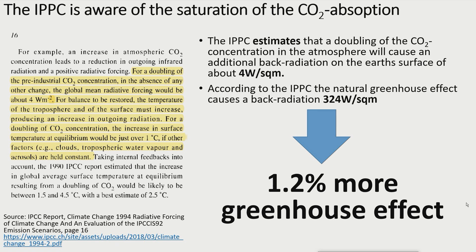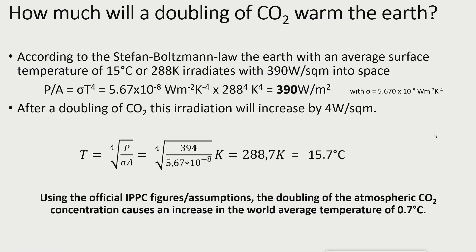Now let's calculate, with the official IPCC figures, what warming effect a doubling of the atmospheric CO2 concentration should have. According to the Stefan-Boltzmann law, the Earth with an average surface temperature of 15 degrees centigrade or 288 Kelvin irradiates 390 watts per square meter. After a doubling of CO2, this irradiation increases by 4 watts per square meter. Going back to the Stefan-Boltzmann equation with 394 watts per square meter gives an average surface temperature of 15.7 degrees centigrade — meaning the doubling of atmospheric CO2 causes an increase of 0.7 degrees centigrade.